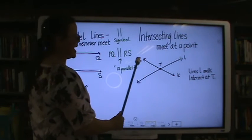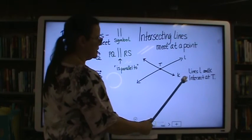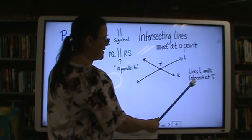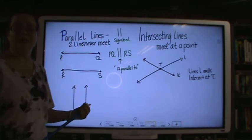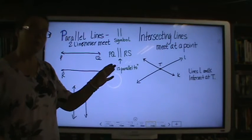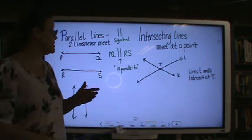Intersecting lines meet at a point. Lines L and K intersect at T. In our town here, our high street intersects with Mulberry Street where our post office sits. They would be intersecting lines.